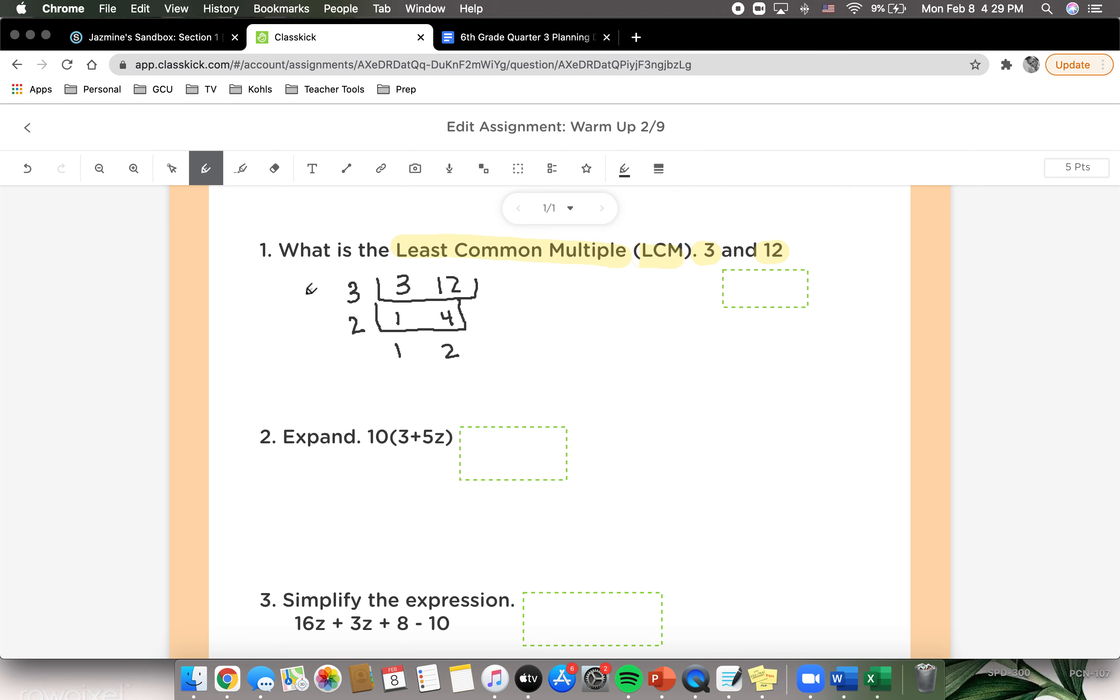And now we're going to take all of these numbers on the outside, and we are going to multiply them all together. So we get 3 times 2 times 1 times 2. We're going to multiply 3 times 2, which gives us 6, times 1, times 2, 6 times 1 equals 6, times 2, gives us 12. So our least common multiple for 3 and 12 is 12.